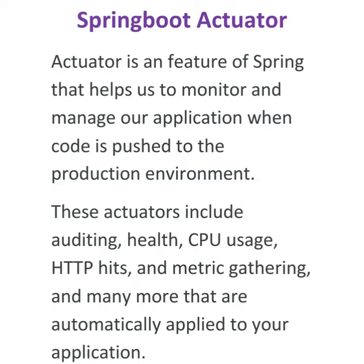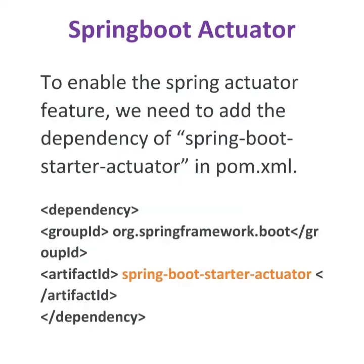Actuator helps us to monitor auditing, health, CPU usage, HTTP hits, etc. So once we enable Actuator in our project, it will automatically apply to our application. To enable the Spring Actuator feature, we need to add the dependency of Spring Boot Starter Actuator in pom.xml. This will provide all the built-in actuator features in our application.